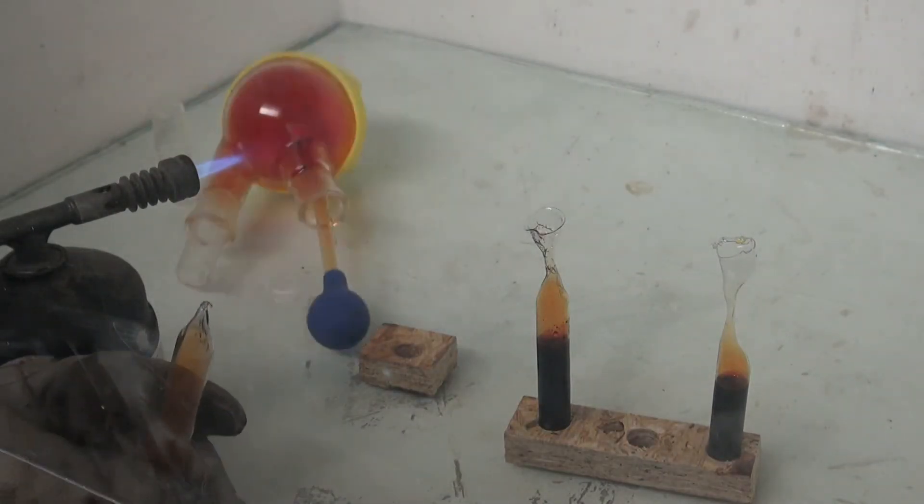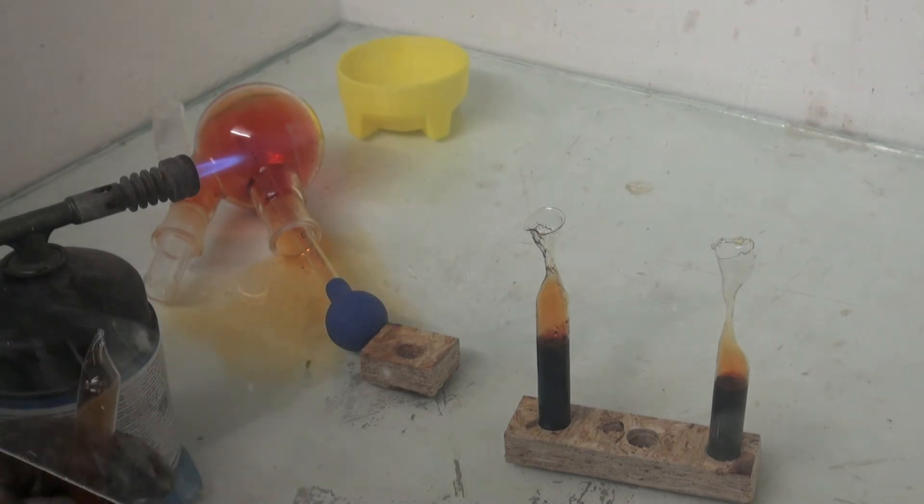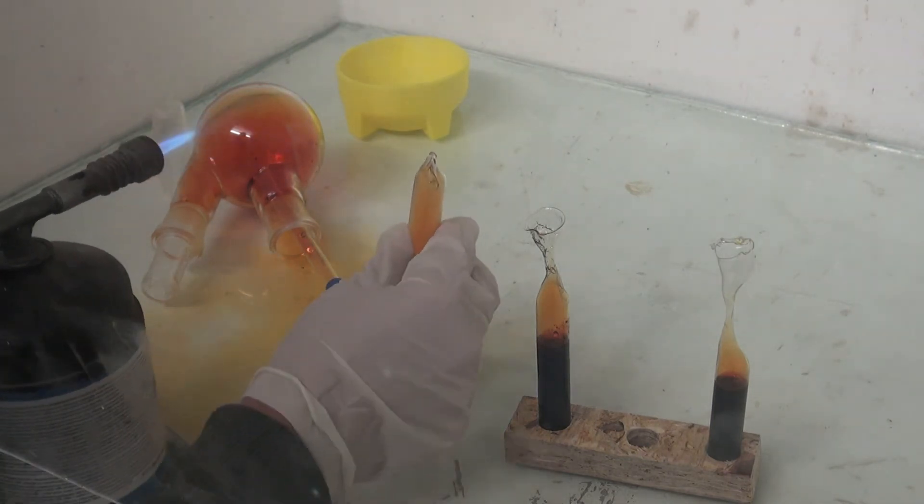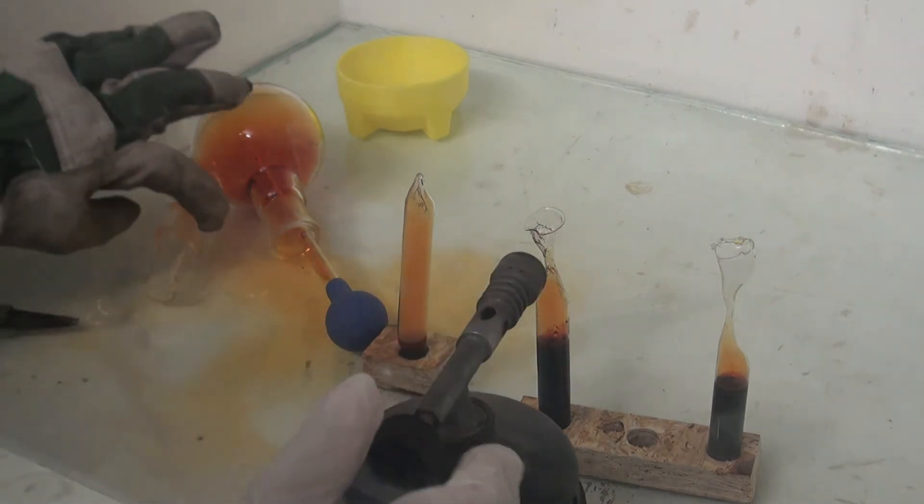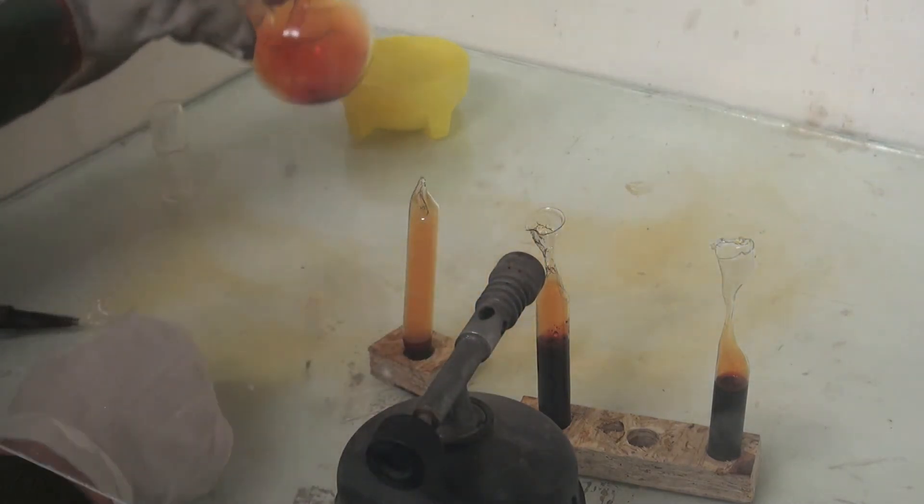Everything worked fine until the flask fell over because of my stupidity. A lot of toxic red bromine gas poured out, but luckily my fume hood was working.